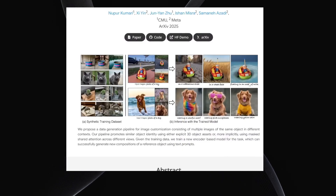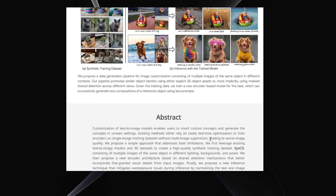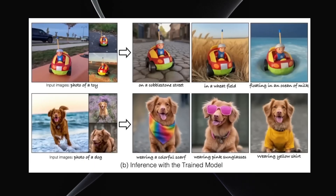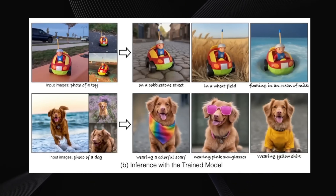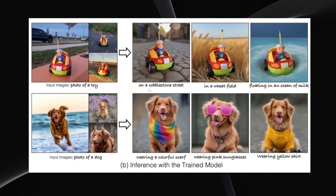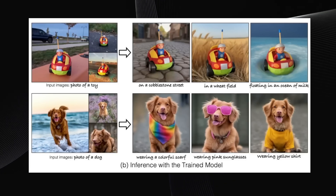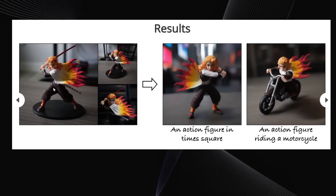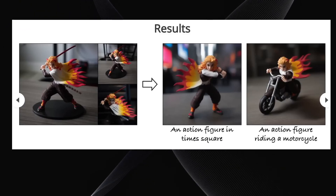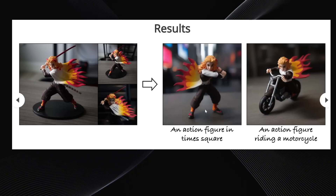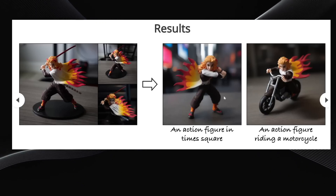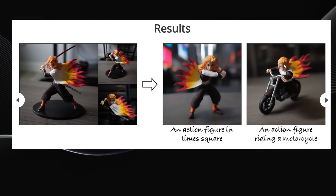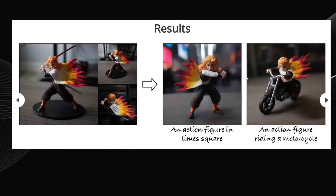And finally, let's talk about SyncCD, a new AI that lets you seamlessly insert reference objects or characters into generated images. You provide reference images, then use a text prompt to describe the scene, and SyncCD places your object into that scene, maintaining consistency with your reference images. Here are some examples: let's say you upload three reference images of an anime figure, then prompt it with 'an action figure in Times Square.' Notice how it preserves the figure's pose, design, robe, hair, and facial features. Or prompt it with 'an action figure riding a motorcycle' — again, the character's look and design are maintained.